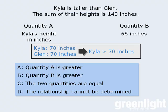Now we still don't know exactly how tall Kyla is, but that doesn't matter, because we now have enough information to compare quantity A and quantity B. If Kyla is taller than 70 inches, then her height must be greater than 68 inches. As such, quantity A must be greater than quantity B. Which means the correct answer here is A.